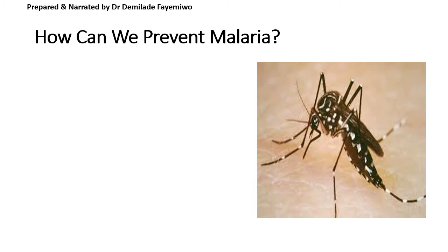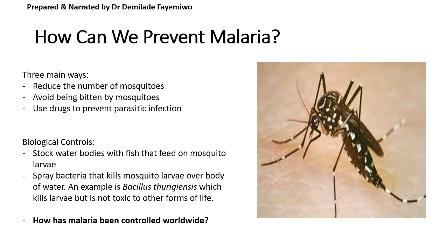How can we prevent malaria? There are three main approaches. First, reduce the number of mosquitoes — though this is a Herculean task. Second, avoid being bitten by mosquitoes, which is difficult because they are very small. Third, use drugs such as chloroquine or mefloquine as prophylactics. There are also biological control methods: since mosquitoes lay their eggs on bodies of water, water bodies can be stocked with fish that feed on mosquito eggs. Alternatively, bacteria such as Bacillus thuringiensis can be sprayed over water to kill mosquito larvae — it kills larvae but is not toxic to other forms of life.